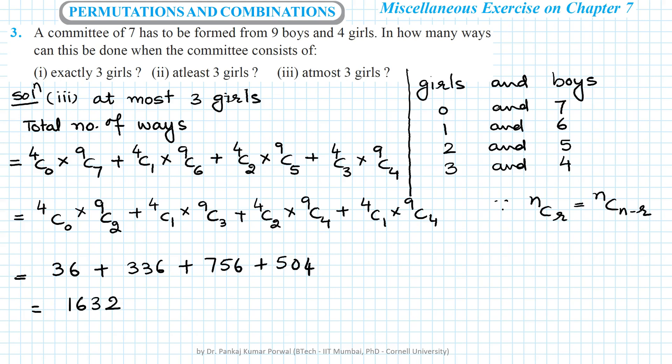And this in total will give me 1,632. So total 1,632 different committees can be selected if there are at most three girls.